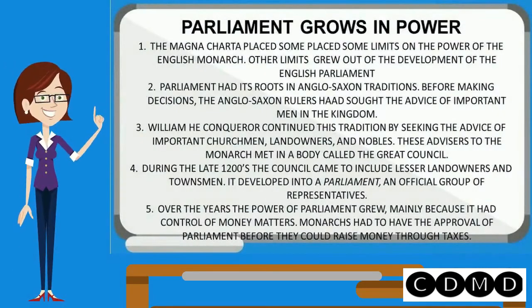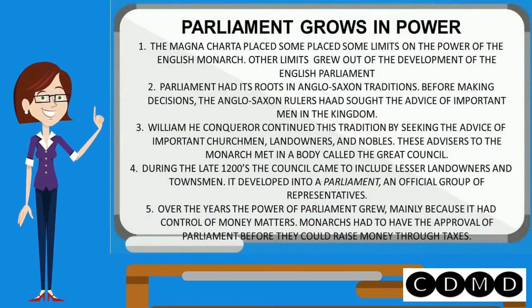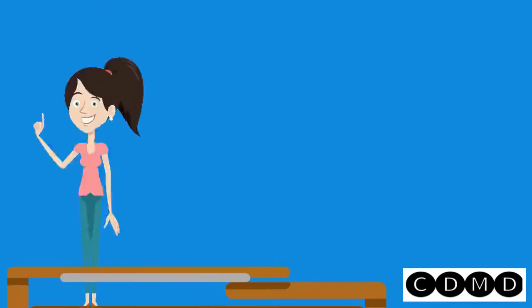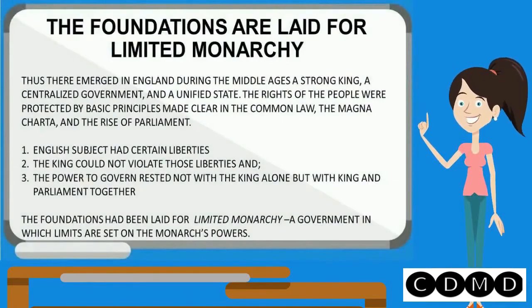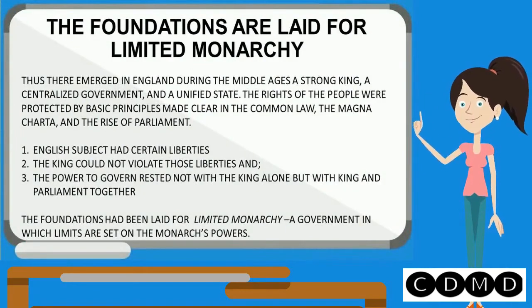Parliament grows in power. The Magna Carta placed some limits on the power of the English monarch. Other limits owed to the development of the English Parliament. Parliament had its roots in Anglo-Saxon traditions; before making decisions, Anglo-Saxon rulers had sought the advice of important men in the kingdom. Thus there emerged in England during the Middle Ages a strong king, a centralized government, and a unified state. The rights of the people were protected by basic principles made clear in the common law, the Magna Carta, and the rights of Parliament.